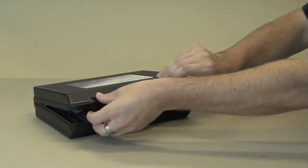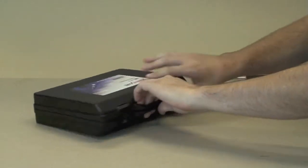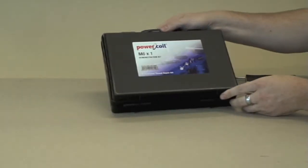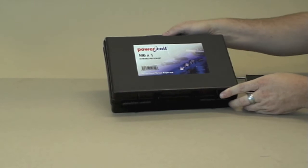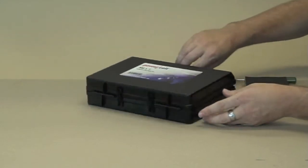We'd like to demonstrate the installation and use of power coil wire thread inserts. What we have here is a demonstration kit covering M6 by one pitch.